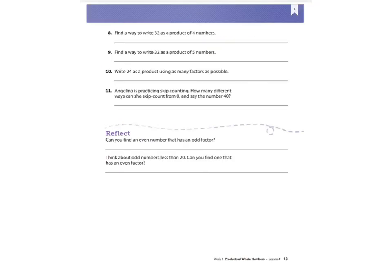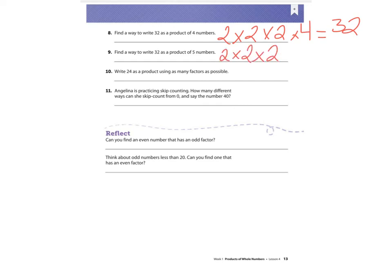Number eight: find a way to write 32 as a product of four numbers. A calculator would be helpful here. Two times two is four, times two again is eight, and eight times four equals 32. Number nine: write 32 as a product of five numbers — just do two times two, five times: two times two times two times two times two equals 32.